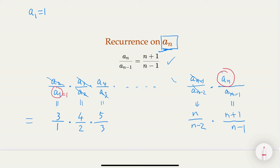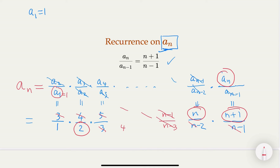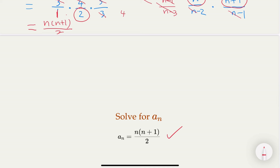After cancellation, we are left with An over A1 on the left. Since A1 equals one, that's just An. On the right-hand side, the numerator keeps three, four, five up to n plus one. The denominator keeps one, two, and n, with intermediate terms canceling. So we remain with n plus one on top and two on the bottom, giving An equals n times n plus one over two. Verification: A1 equals one times two over two equals one. Confirmed.